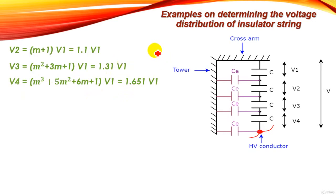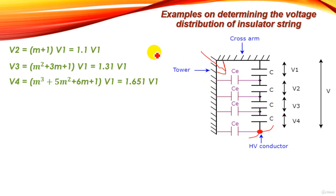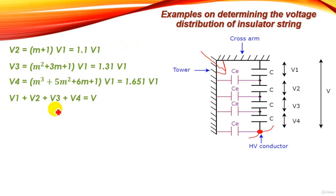These equations can be extracted and deduced using simple circuit analysis for this configuration. We are concerned with the final equations and results because this is a high voltage course, not an electric circuits course. We now have three equations in four unknowns, so we need another equation.